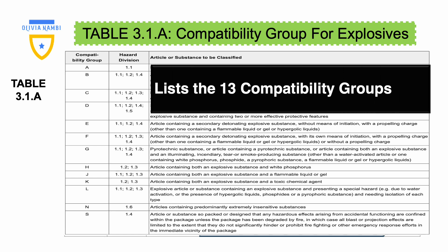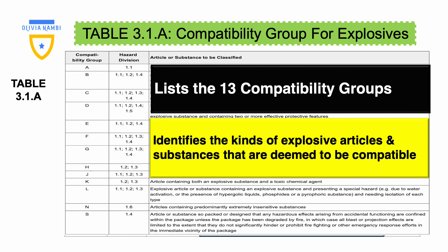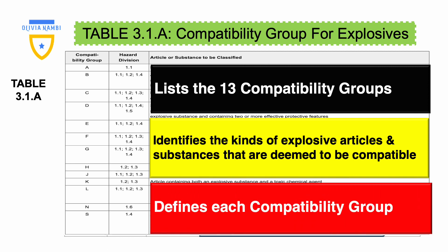Table 3.1.a lists the 13 compatibility groups, identifies the kinds of explosive articles and substances that are deemed to be compatible, and defines each compatibility group. Thank you.